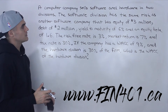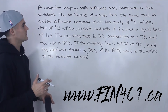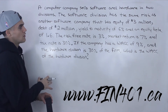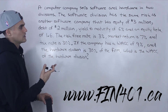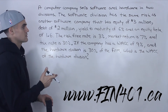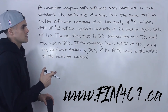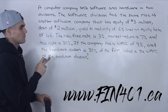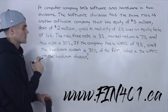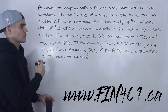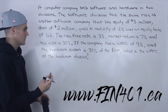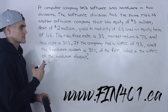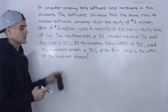So a computer company sells software and hardware in two divisions. The software division has the same risk as another software company that has equity of $3 million, debt of $2 million, yield to maturity of 6%, and an equity beta of 1.6. The risk-free rate is 3%, market return is 7%, and tax rate is 30%. If the company has a weighted average cost of capital of 9% and the hardware division is 30% of the firm, what is the weighted average cost of capital of the hardware division?